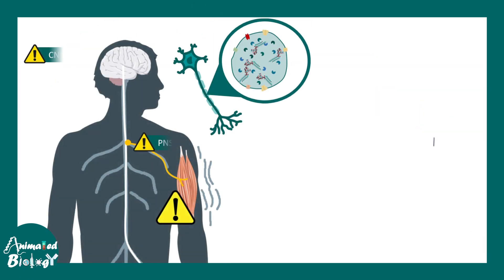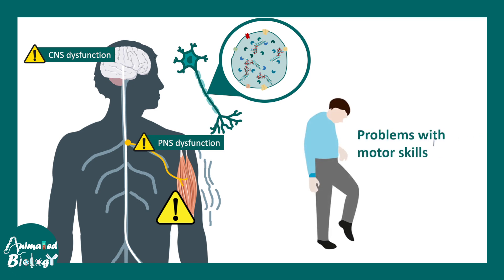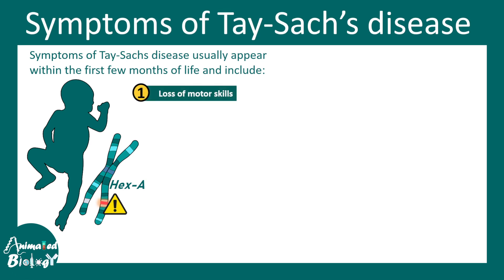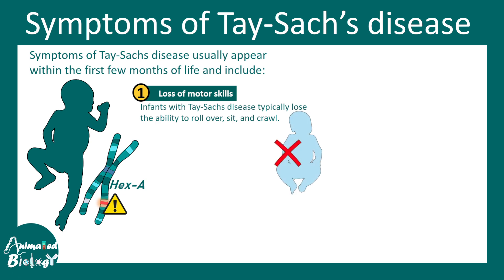Both CNS dysfunction and PNS dysfunction are pretty common in Tay-Sachs disease. In adults there are problems with motor skills. Symptoms usually appear within the first few months of life and may include loss of motor skills — infants with Tay-Sachs disease typically lose the ability to roll over, crawl, or sit upright.